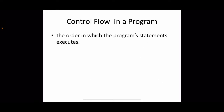To understand control statements, we need to know what control flow actually is. We write a program in Python and the corresponding machine code is executed by the processor. The order in which these statements are taken by the processor for execution is called control flow. In some situations, the processor may select statements in a different order from how they were written.